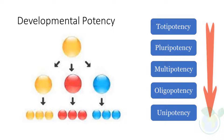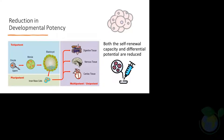The potency of these stem cells can be defined by using a number of functional assays along with the evaluation of various molecular markers. The traditional developmental dogma follows the differentiation of totipotent stem cells to pluripotent stem cells, from pluripotent to multipotent stem cells, multipotent to unipotent stem cells, and finally to mature cells. Both the self-renewal capacity and differential potential are reduced during their journey from totipotent to mature cell state.